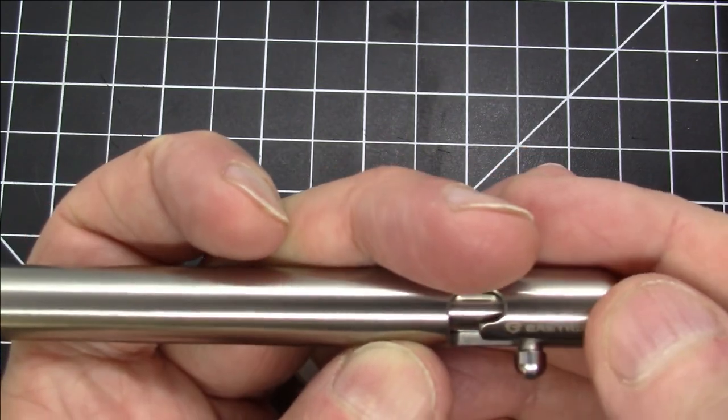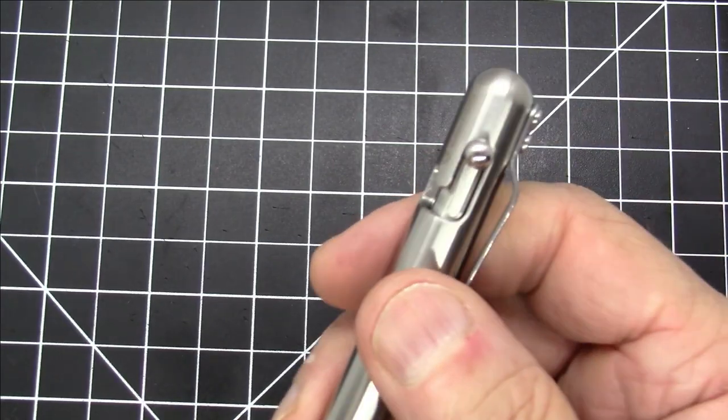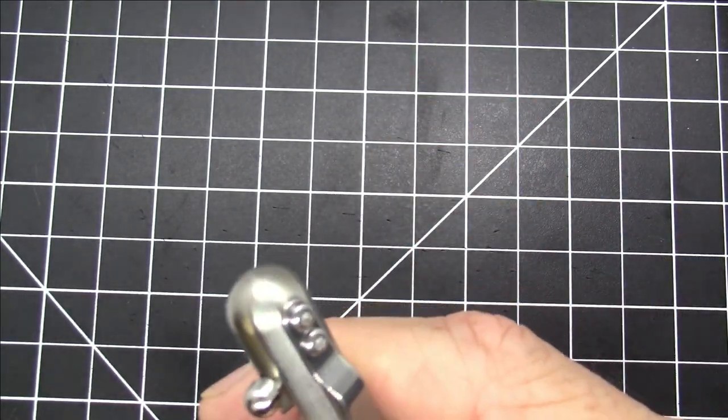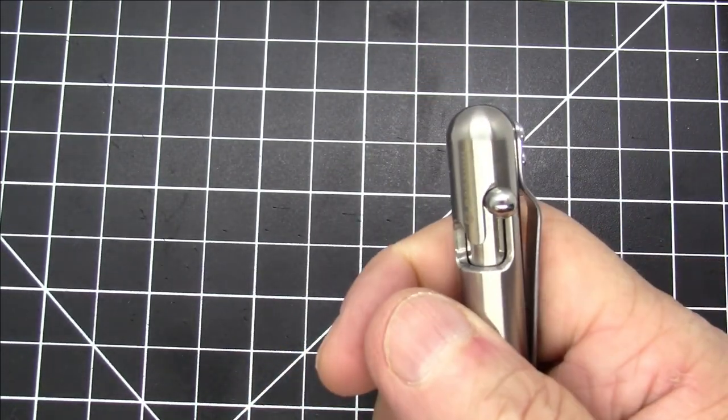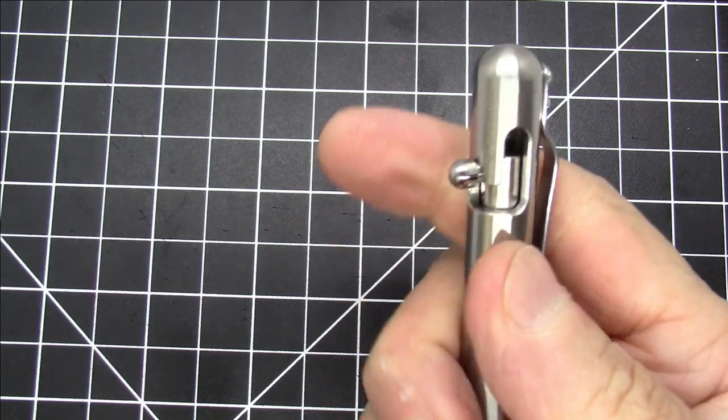It has their branding etched, I guess laser etched, on there very discreetly but done very well. Now let's get to the whole thing about this pen: it's this bolt action retraction mechanism which is really just something to see or feel or hear.